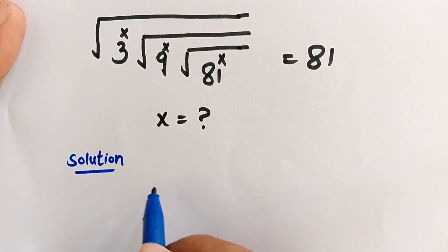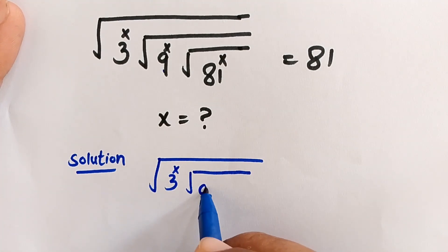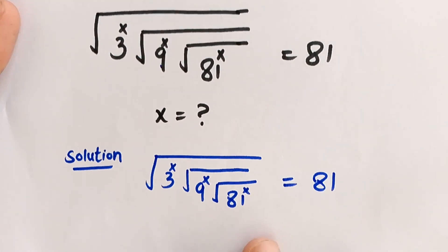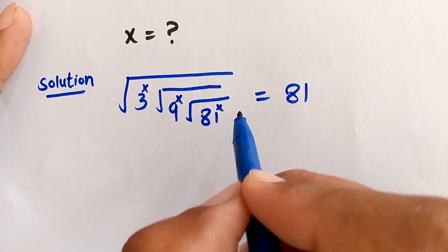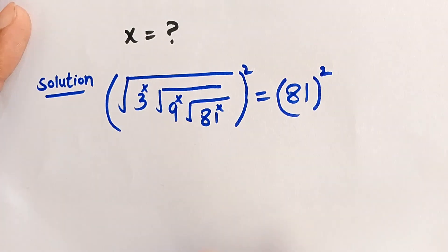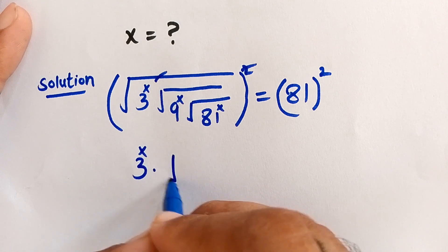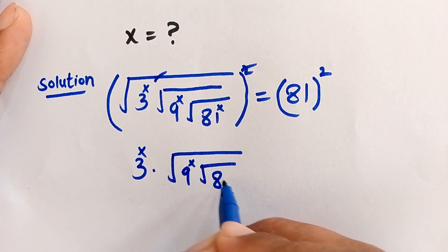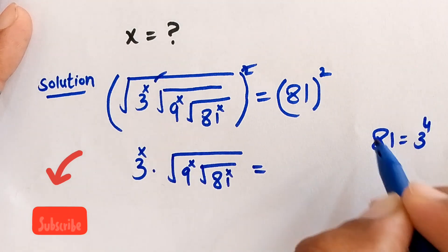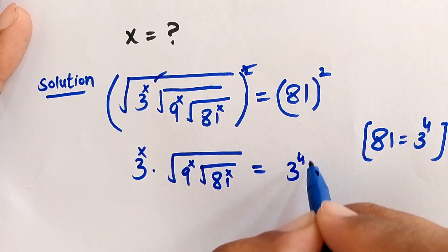To solve this question we start with: √(3^x) · √(9^x) · √(81^x) = 81. We take the square of both sides so the square root cancels with the square. This gives us 3^x · √(9^x) · √(81^x) = 81^2. We know that 81 = 3^4, so the right side becomes (3^4)^2.